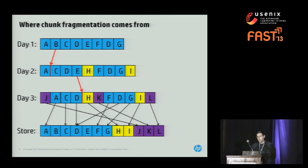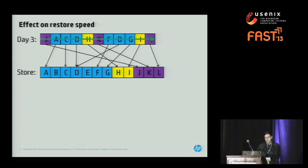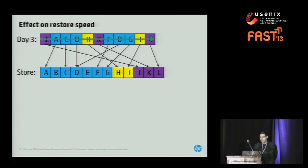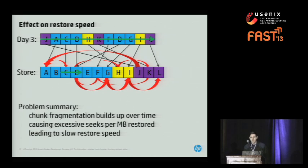What's really going on here is that the new chunks are getting added to the end of the store, and the old chunks are basically left where they are. Because backups mix data of different ages, we get fragmentation on the store and a tangled recipe. The problem is this makes restore speed very problematic. When we want to restore our backup, we want to logically start on the left and go across and get all our data back. But when we look at what we actually have to do on the store, every one of these red lines is a random seek. Chunk fragmentation builds up over time, causing excessive seeks per megabyte restored, leading to slow restore speed.